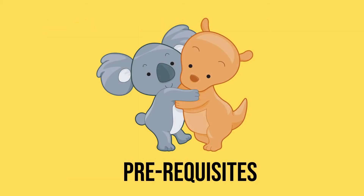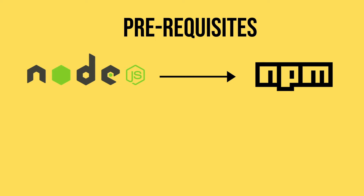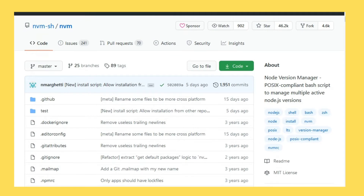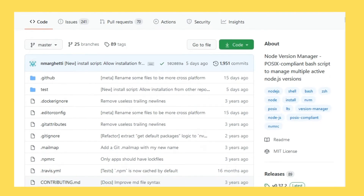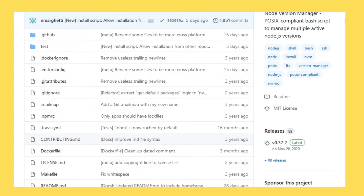There are two prerequisites that you need to meet in order to easily follow this tutorial. First, you need to have Node installed on your machine so that you can install packages with npm. I would recommend that you use a Node version manager so you can keep multiple versions of Node on your machine. An official page with installation instructions can be found on GitHub, and I will be posting a link in the video as well.